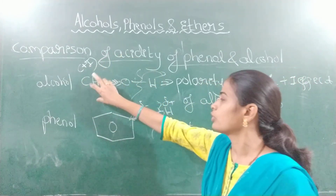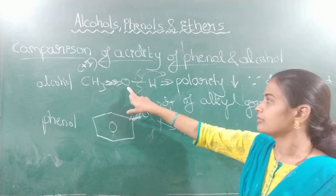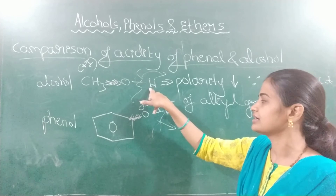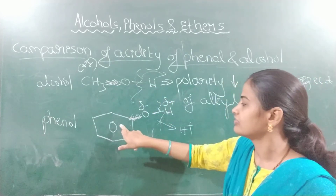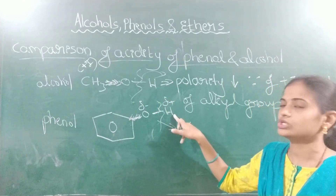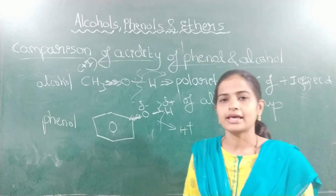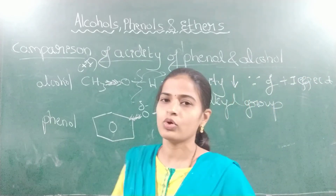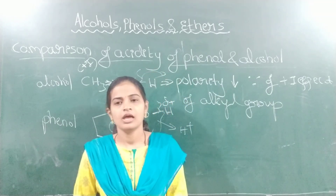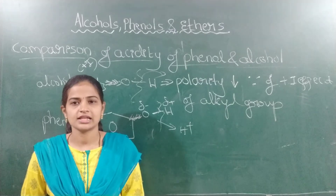Due to the plus I effect shown by the alkyl group, the polarity between oxygen and hydrogen decreases; hence acidity decreases. Due to the minus I effect of the phenyl group, the polarity between oxygen and hydrogen increases; therefore phenols are more acidic in nature — phenols are more acidic compared to alcohols. We will discuss more in the next class.